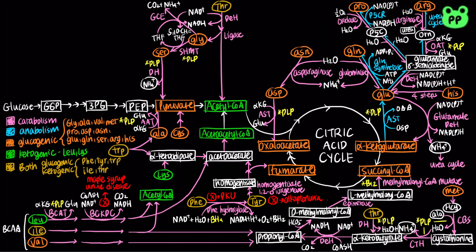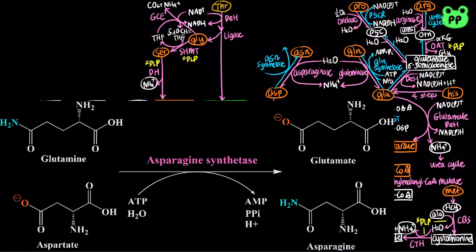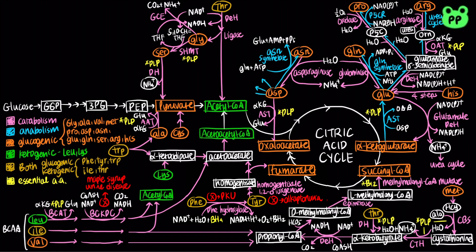Oxaloacetate can undergo transamination by aspartate aminotransferase to form aspartate, which can be converted to asparagine by asparagine synthetase, coupled to the hydrolysis of ATP to AMP as well as the amination of glutamine to glutamate. In bacteria, aspartate can also serve as a precursor to methionine, threonine, and lysine, which are essential amino acids for humans. Alanine can be synthesized from pyruvate by the reversible alanine aminotransferase. In bacteria, pyruvate also serves as a precursor to the three branched-chain amino acids — isoleucine, leucine, and valine — which are essential amino acids for humans.